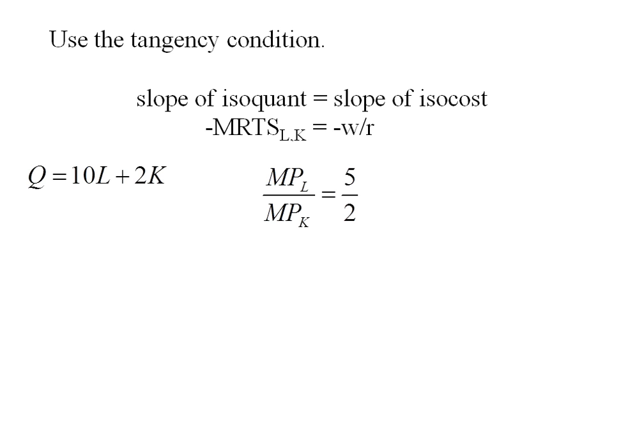Go back to my production function to take my partial derivatives to get the marginal products. The partial derivative of Q with respect to L is 10, and the partial of Q with respect to K is 2. So I can plug in 10 over 2 equals 5 over 2, except that's not actually equal. We've got 5 versus 2 and a half.